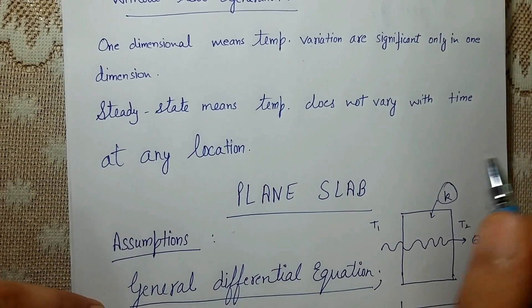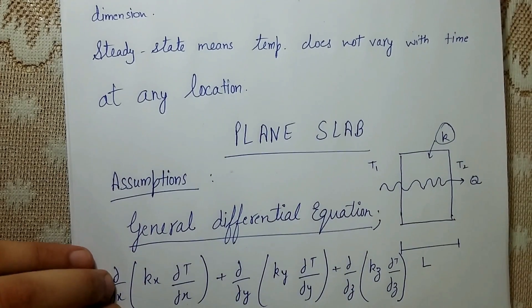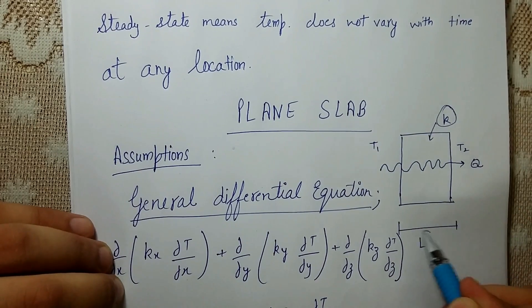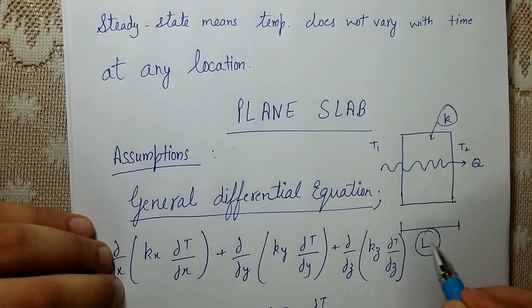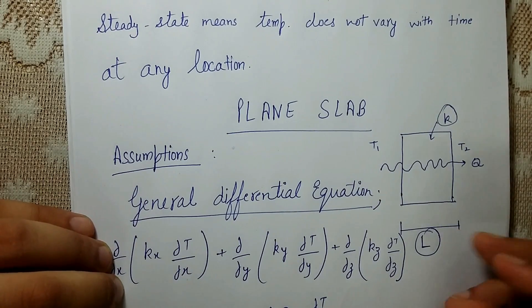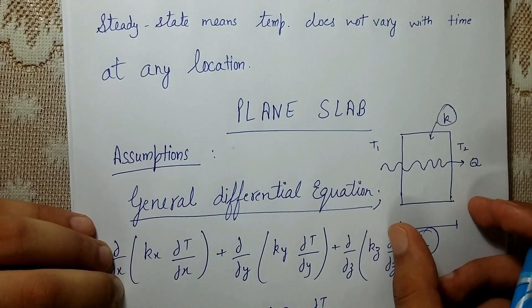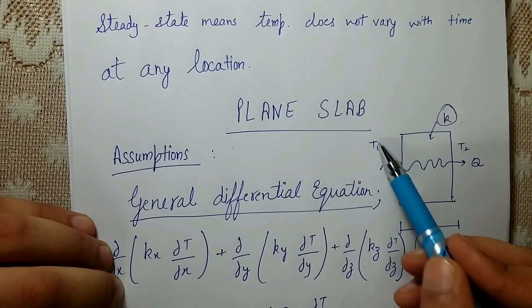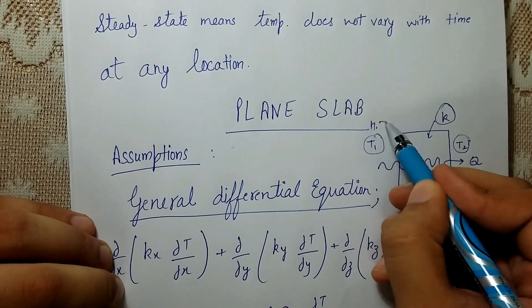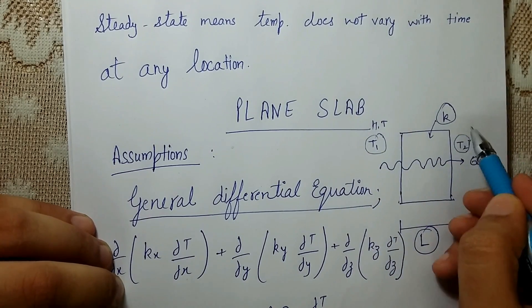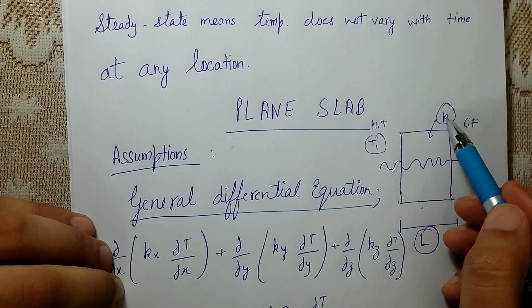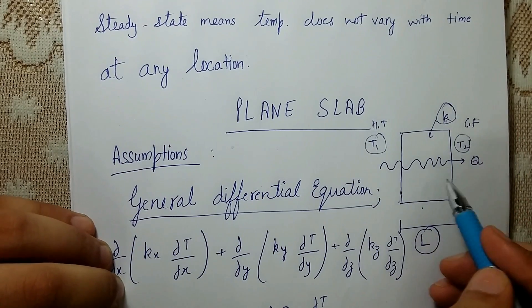Let's start with the geometry. We take a plane slab of thickness L — note that L signifies thickness here, not length. On one surface the temperature is T1 and on the second surface it is T2. Let's suppose there is a hot fluid on one side and a cold fluid on the other side.